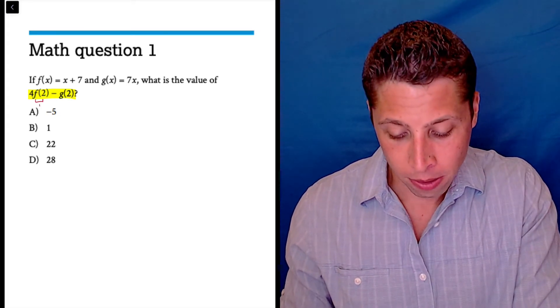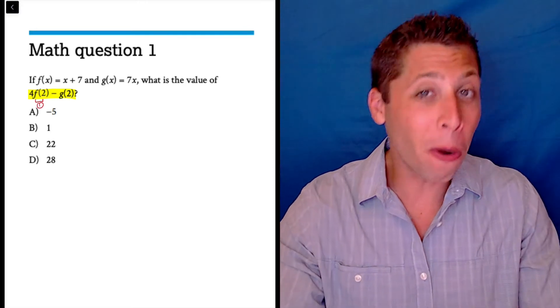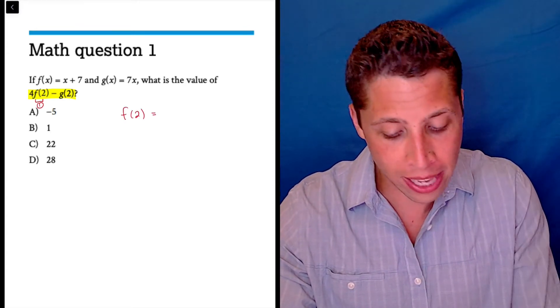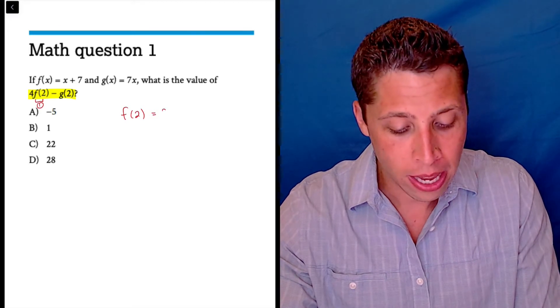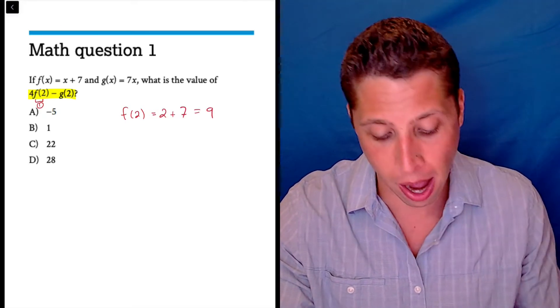It's right here, f of two. Just do the f of two. Don't overburden your brain with a million things at once. F of two means we take the f equation, which is x plus seven, and we pop the two in for the x. So two plus seven. So f of two is nine. Great.